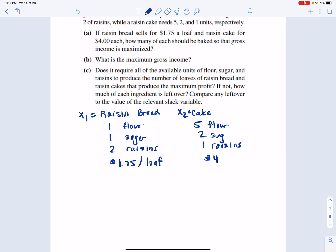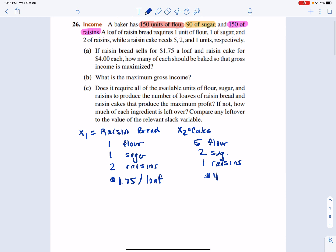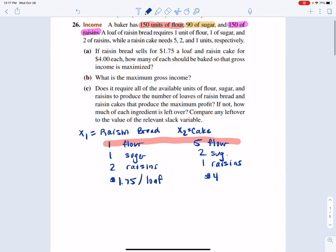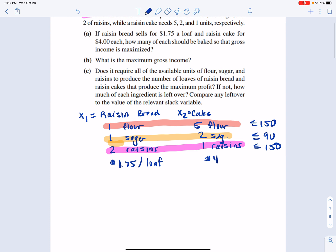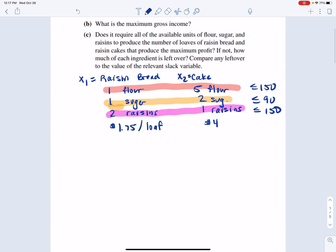And we are told that the flour, the units of flour available are 150. So flour plus flour is less than or equal to 150. We have the number of units of sugar are less than or equal to 90. And the number of units of raisins is less than or equal to 150. So there's our constraints.